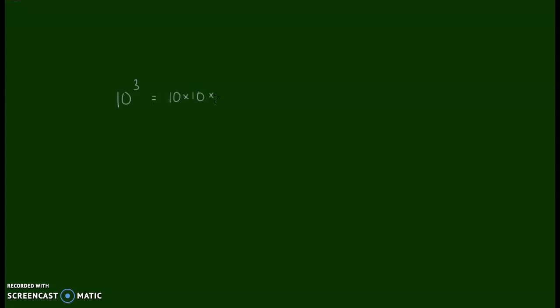I'd like to start off reviewing powers of 10. So if we have 10 to the third power, we would say this is written in exponential notation. 10 is considered the base, 3 is the exponent, and 10 to the third power is the same as 10 times 10 times 10, which is 1000. You might notice that when we do 10 times 10 times 10, there's three zeros, and 1000 has three zeros. It's something to remember.